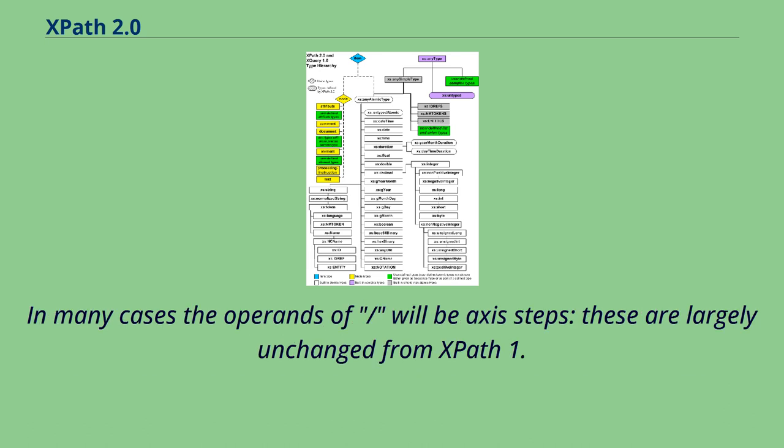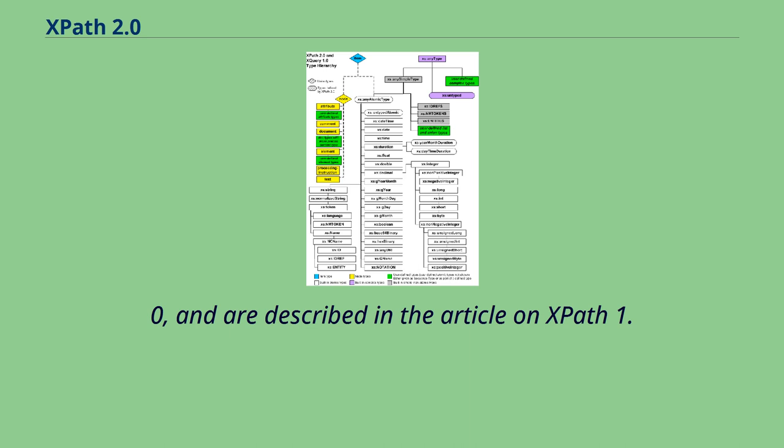In many cases the operands of slash will be axis steps. These are largely unchanged from XPath 1.0 and are described in the article on XPath 1.0.